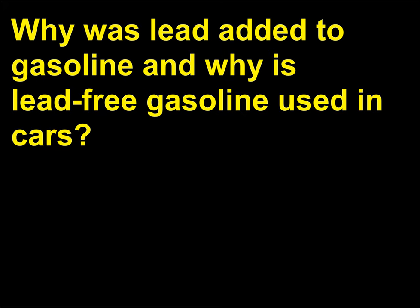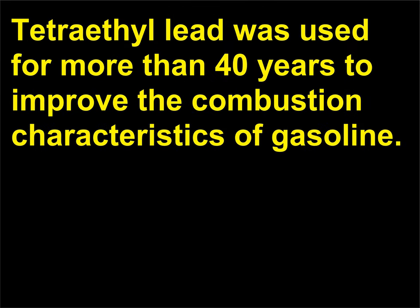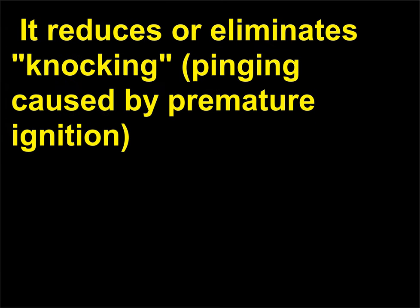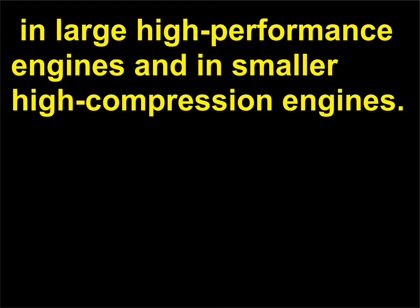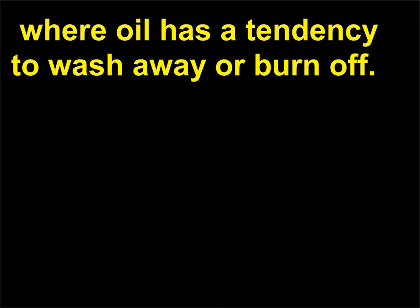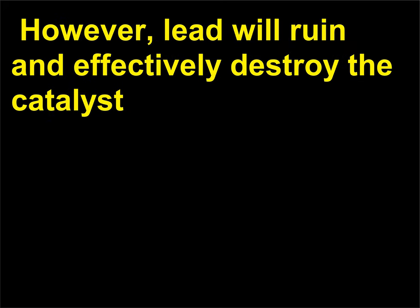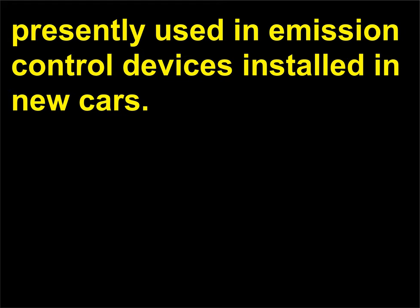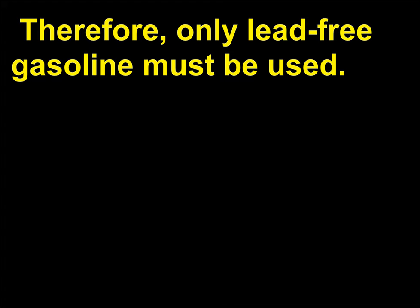Why was lead added to gasoline and why is lead-free gasoline used in cars? Tetraethyl lead was used for more than 40 years to improve the combustion characteristics of gasoline. It reduces or eliminates knocking — pinging caused by premature ignition — in large high-performance engines and in smaller high-compression engines. It also provides lubrication to the extremely close-fitting engine parts where oil has a tendency to wash away or burn off. However, lead will ruin and effectively destroy the catalyst presently used in emission control devices installed in new cars. Therefore, only lead-free gasoline must be used.